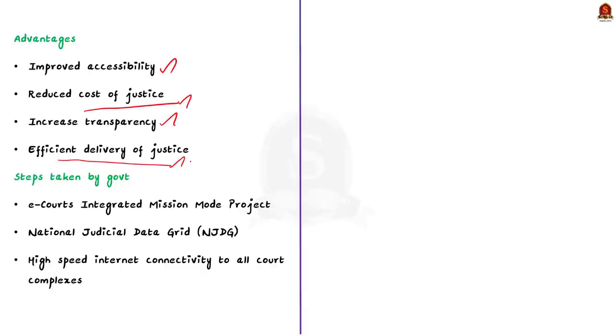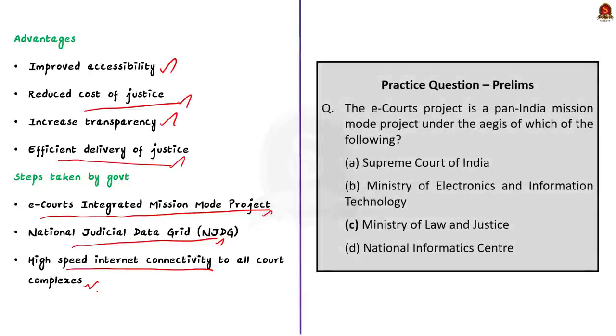Now, let us see some of the steps taken by the government to improve the functioning of the e-courts. Recently, the government of India launched the e-courts integrated mission mode project in the country. This is done for the computerization of the district and subordinate courts. In addition to this, the national judicial data grid is created as a online platform under the e-courts project. It provides information relating to judicial proceedings of all district courts. The government also provided high-speed internet connectivity to all courts in India to facilitate e-courts projects. These are some of the steps taken by the government to make e-courts projects a reality in India. So, that's all regarding this discussion. In this discussion, we saw the basics about e-courts, how it is implemented in India, the advantages of e-courts and the steps taken by the government to implement the e-courts project. With this, let us conclude this discussion and take up the next news article.